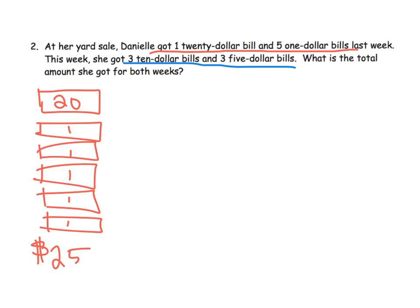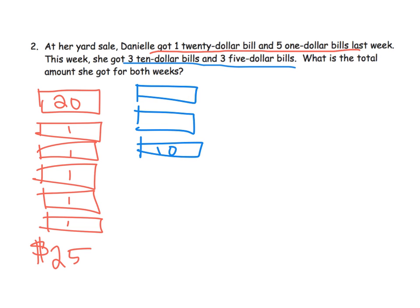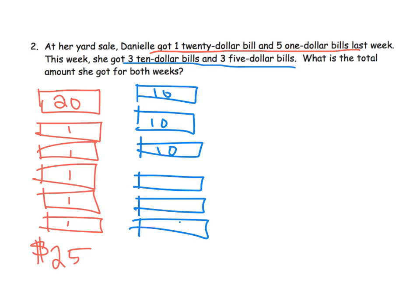How much money did she get that first week? She got twenty-five dollars. Remember we want to put that dollar symbol on the left, not the right — even though we're saying twenty-five dollars, you put the symbol on the left. The second week she got three ten-dollar bills — one, two, three — and three five-dollar bills: five, five, and five.